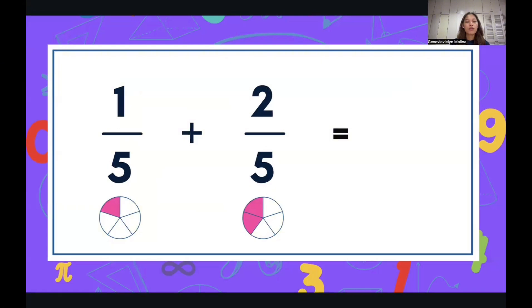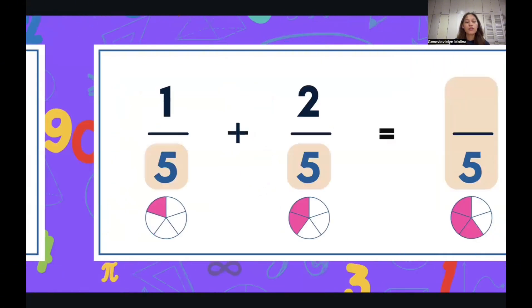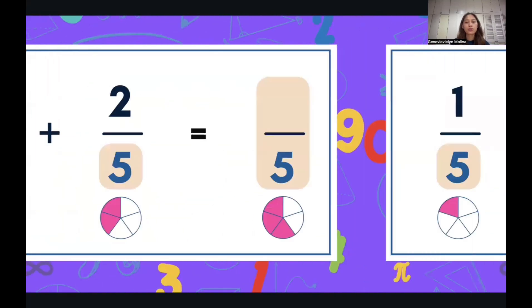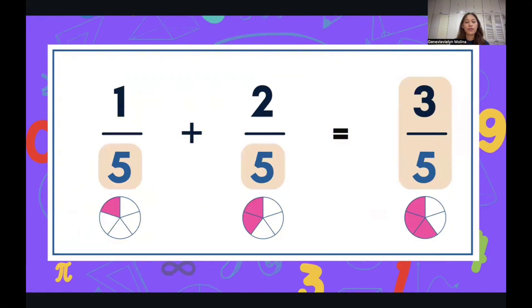Now for our first problem, we have 1 fifth plus 2 fifths, so we just have to copy the denominator, 5, and then add the numerators, 1 plus 2 is 3, so we have 3 fifths.